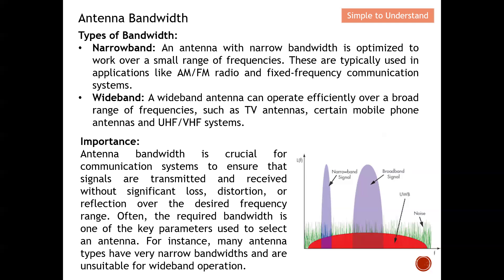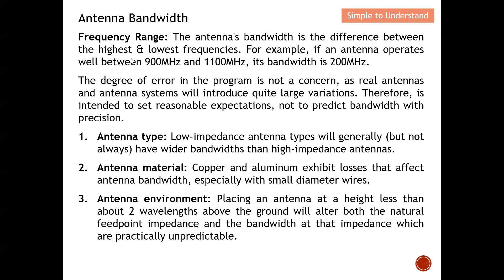When we talk about the frequency range of the antenna bandwidth, we simply mean the difference between the highest and lowest frequency. For example, if an antenna operates between 900 MHz and 1100 MHz, then 1100 MHz minus 900 MHz gives us 200 MHz — so the bandwidth is 200 MHz.